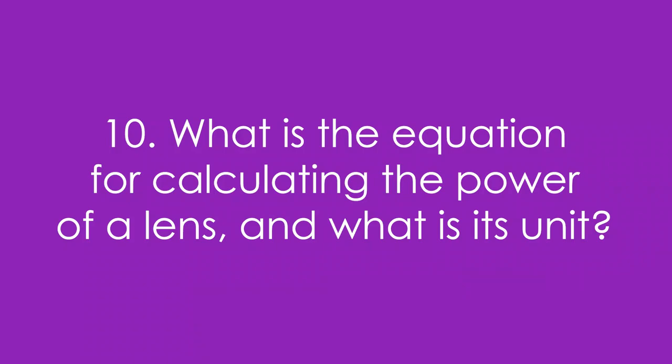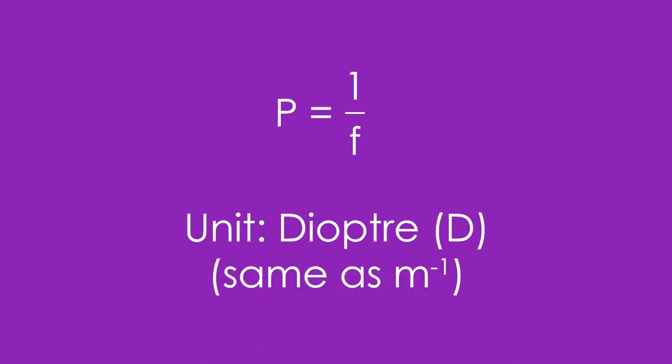What is the equation for calculating the power of a lens, and what is its unit? Power is equal to 1 divided by the focal length. The unit is diopter, and that's the same as meters to the minus 1. The fatter a lens is, the more powerful it is, the higher diopter it is.